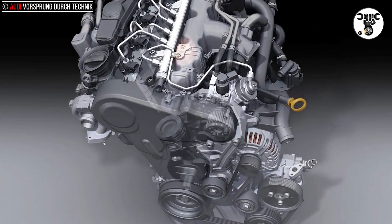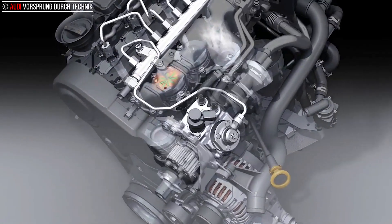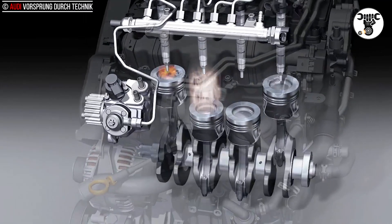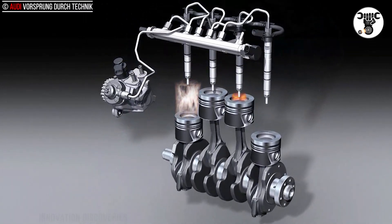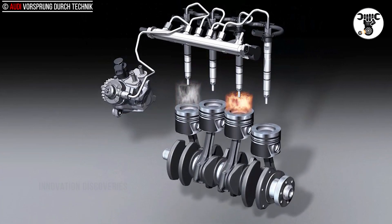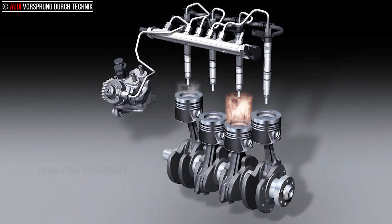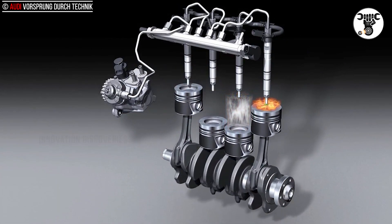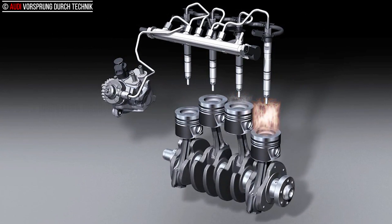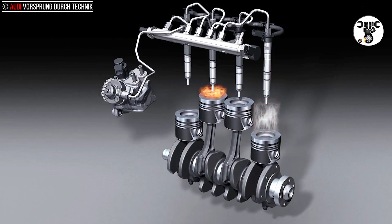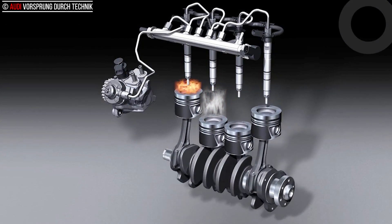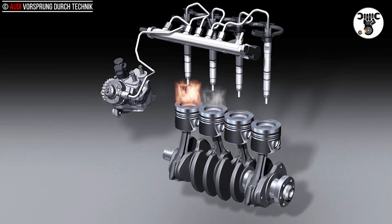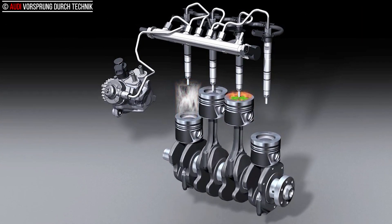Therefore, the injection parameters can be freely controlled, giving engine developers the freedom to divide the injection event up into a number of individual injections taking place during each engine revolution. Pilot injections before the piston reaches top dead center in the cylinder allow fuel pressure to be built up gradually, so that combustion is quieter. Post injections reduce emissions and are also used to regenerate the particulate filter.